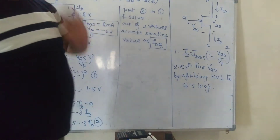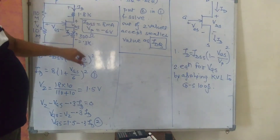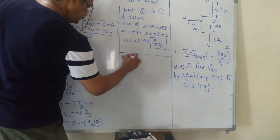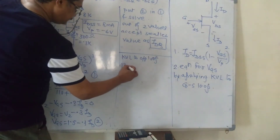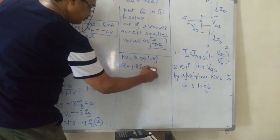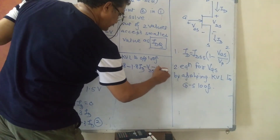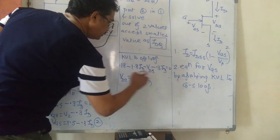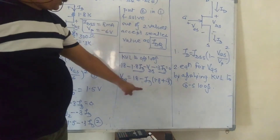Yesterday we calculated VCE by applying KVL to the output loop. Now we calculate VDS by applying KVL to the output loop. Writing the KVL equation: 18 − 1.8·ID − VDS − 0.3·ID = 0. So VDS = 18 − ID·(1.8 + 0.3). Put the solved value of ID here to get the second answer.